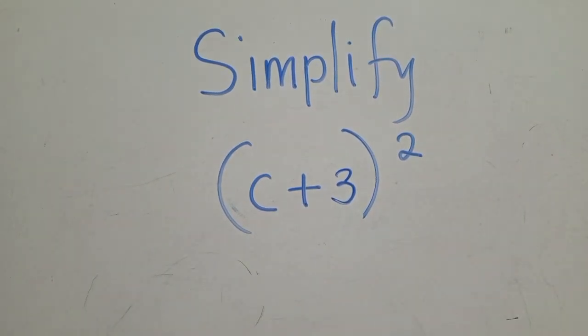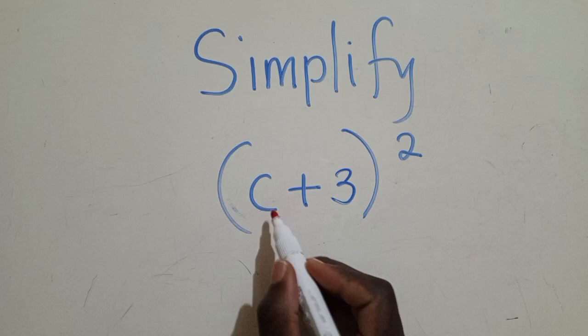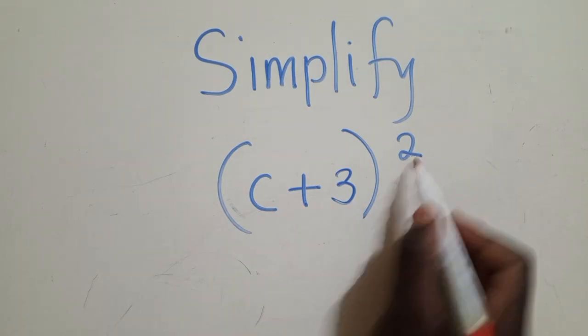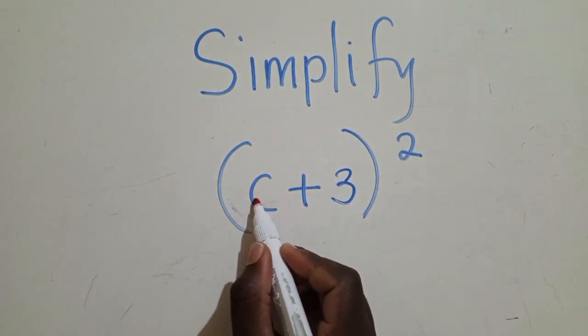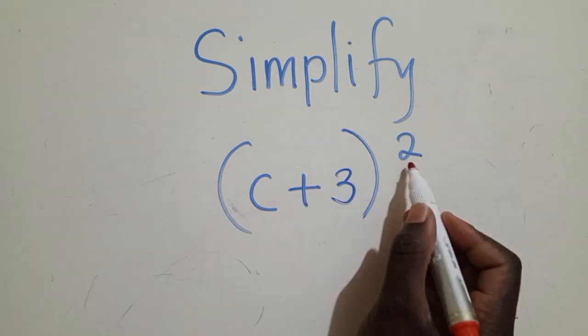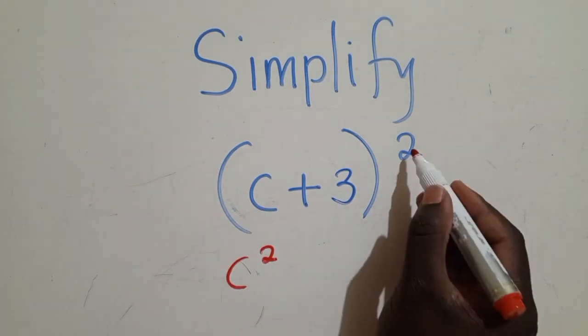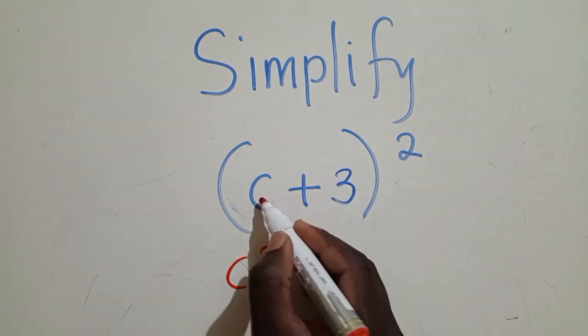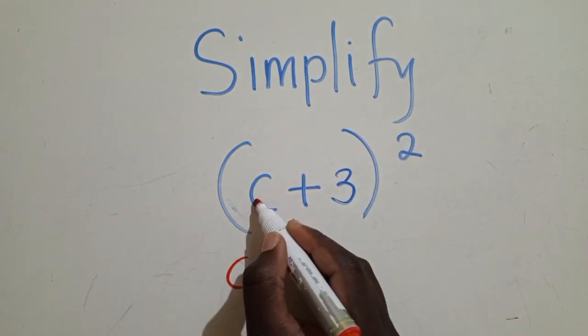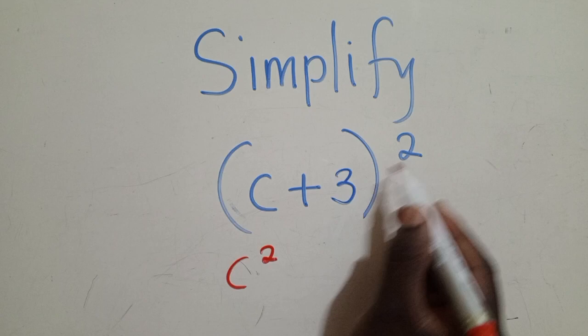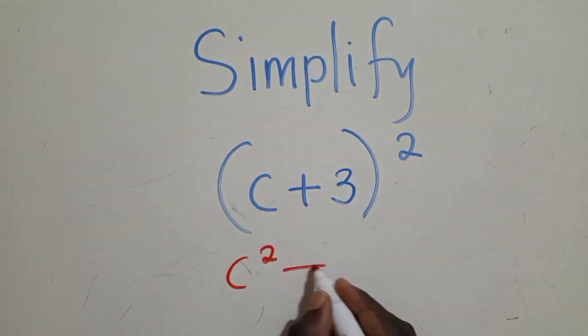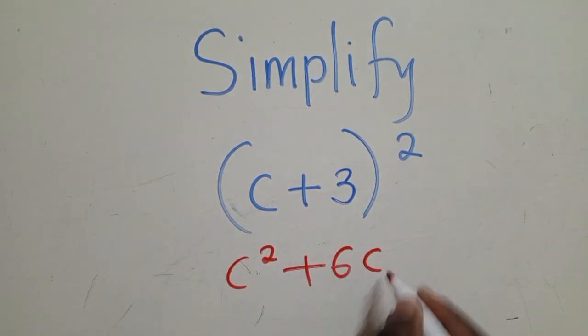So what we're going to do here is, we check this is power 2. So we're going to say, the first term here squared, first term squared, it will give us C power 2. And then we come and say, the power here, whatever term is here, times what is here. So it will be 2 times C times 3. It will give us 6C.